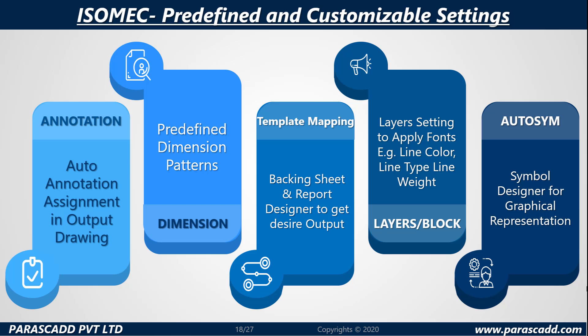Isomec predefined and customizable settings include auto annotation assignment, predefined dimension patterns, template mapping, layers setting to apply fonts — for instance, line color, line type, and line weight — and a symbol designer for graphical representation.